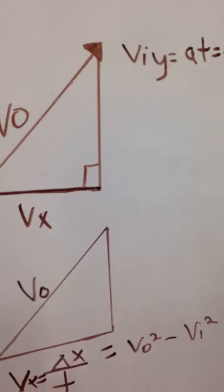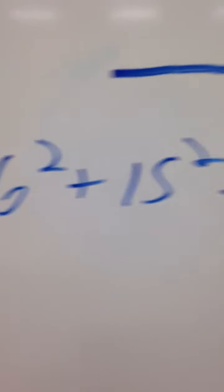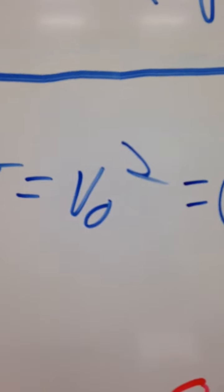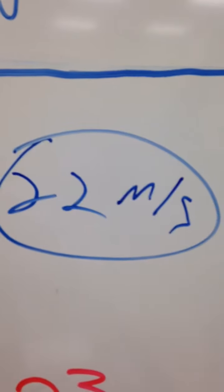Using the Pythagorean theorem, we got 16 squared plus 15 squared equals V-naught squared, which comes to 22 meters per second.